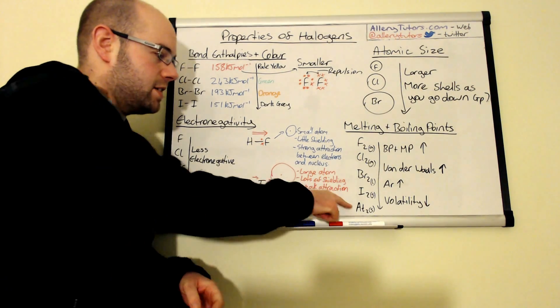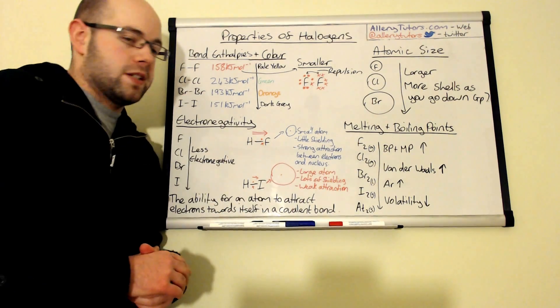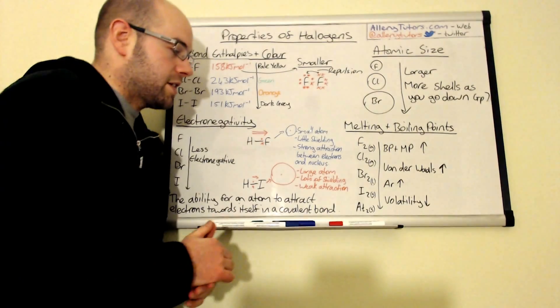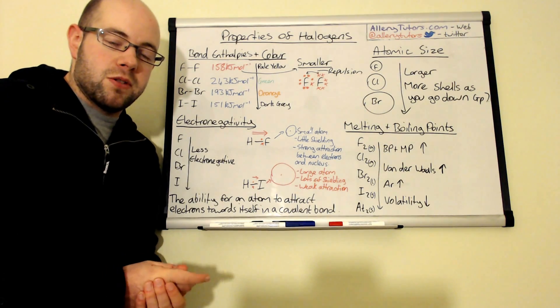And obviously as we go down the group the atomic mass gets bigger so astatine is the heaviest of the halogens there and fluorine is the lightest and the larger the atom the more van der Waals forces you have and that means you have stronger intermolecular forces between these molecules and that's why the melting and boiling point increases.